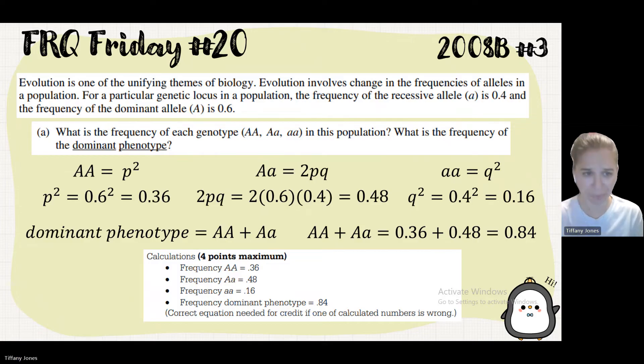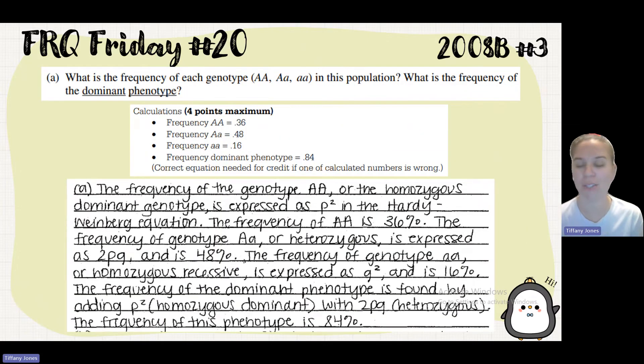And then there is, of course, our scoring guidelines. The frequency of the genotype AA or homozygous dominant genotype is 36%. The frequency of the heterozygous genotype is 48%. The frequency of the homozygous recessive genotype is 16%. The frequency of the dominant phenotype is found by adding p squared with 2pq. The frequency of this phenotype is 84%.